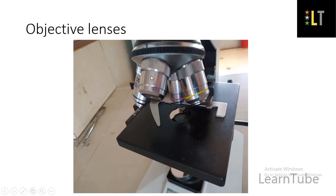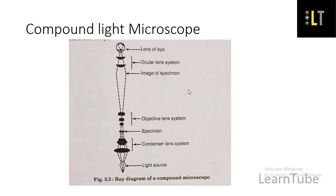The objective lenses are usually available in powers of 5x, 10x, 40x, and 100x. This is the ray diagram of a compound microscope. Light is emitted from the light source, passes through the condenser, and is focused on the specimen — the tissue or microbe to be observed. The image is then transferred from the objective lens to the ocular lens, that is the eyepiece, and from the eyepiece into the lens of your eye.